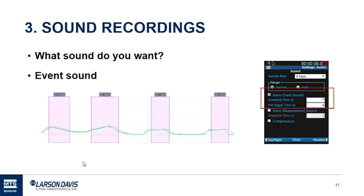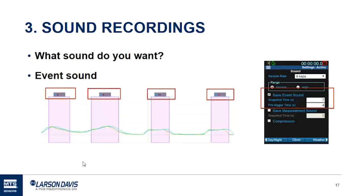Now we're going to move on to sound recordings — our number three way. There are two ways the meter will record your sound: event-based and continuous. For event-based, for every event triggered, the first say seven seconds — that's your snapshot time — is recorded, so each event has a sound recording associated with it. You typically use the sound recording to identify what made the noise. Seven seconds is typical because by that point you can tell what triggered the event.